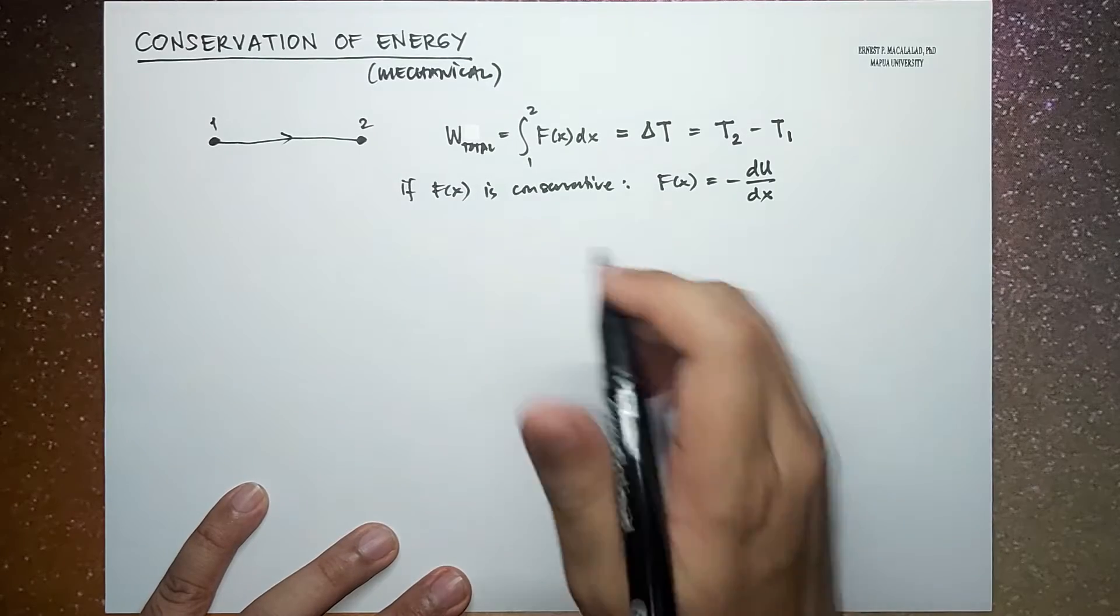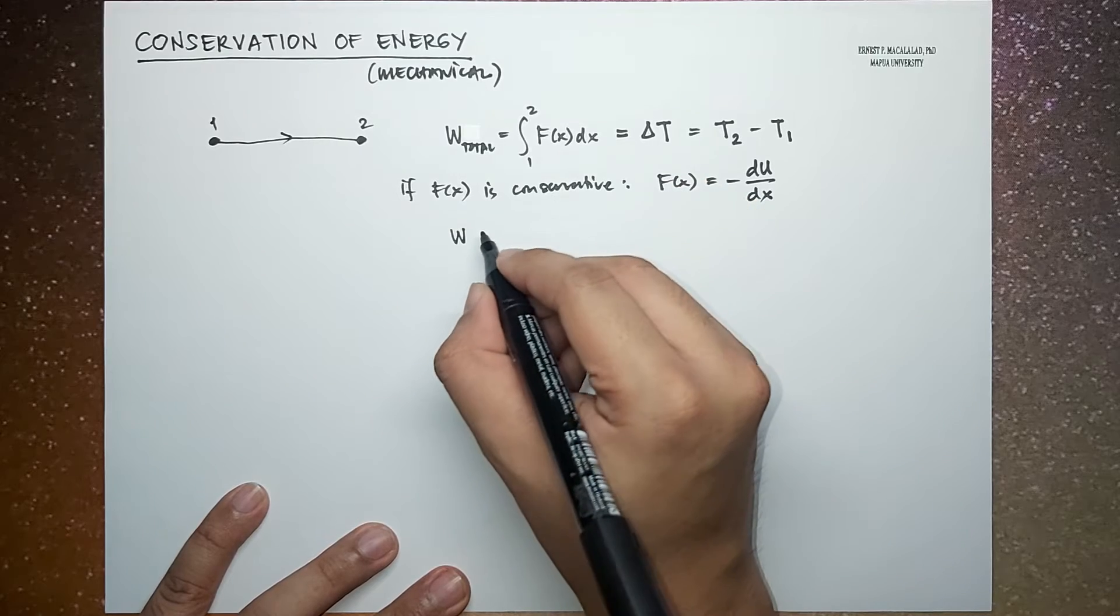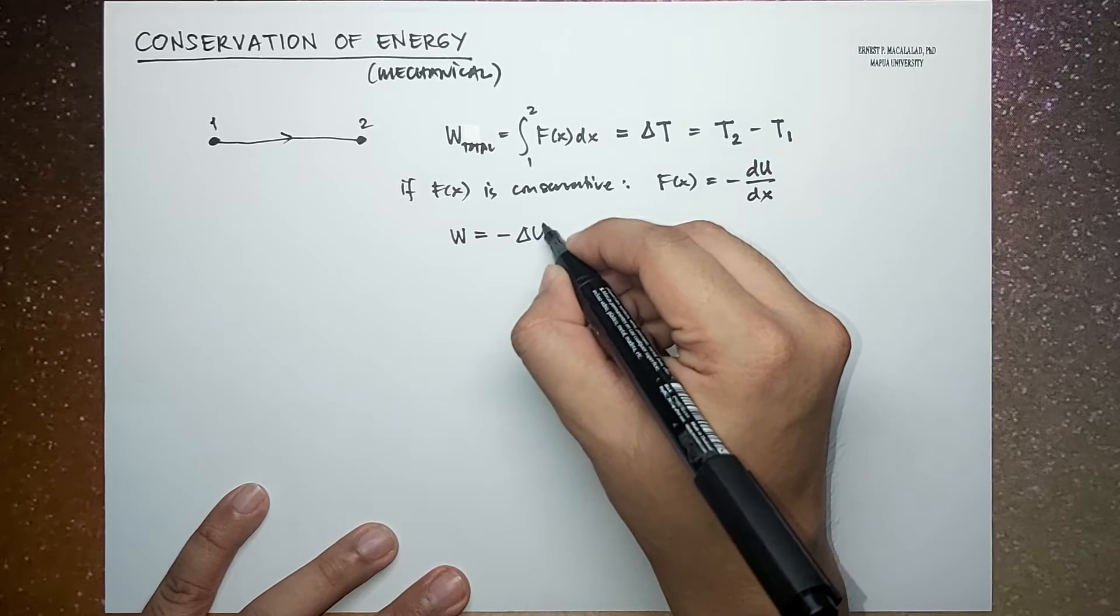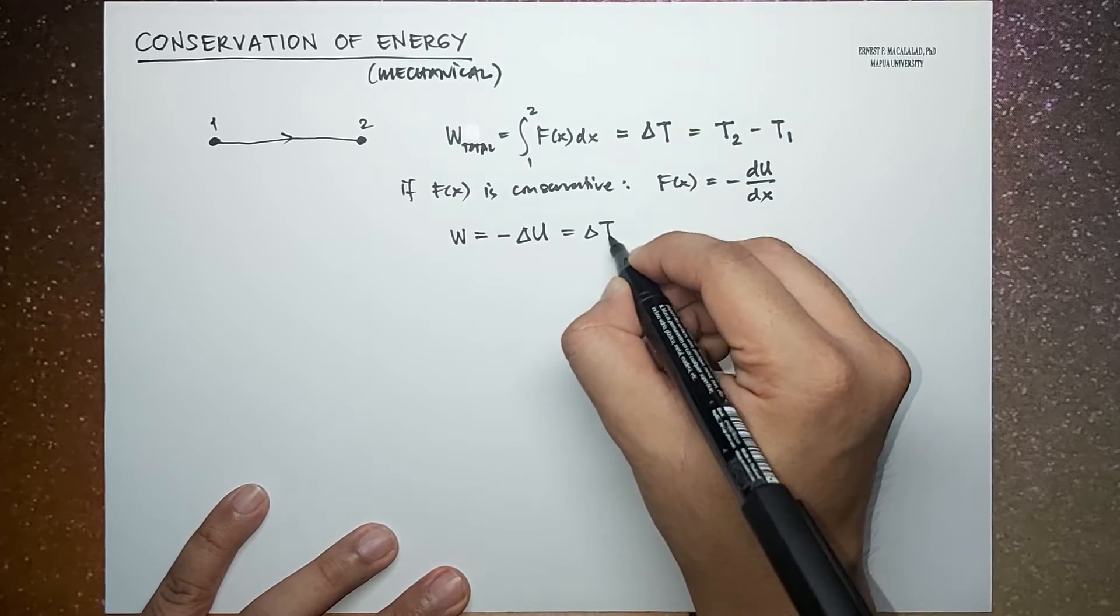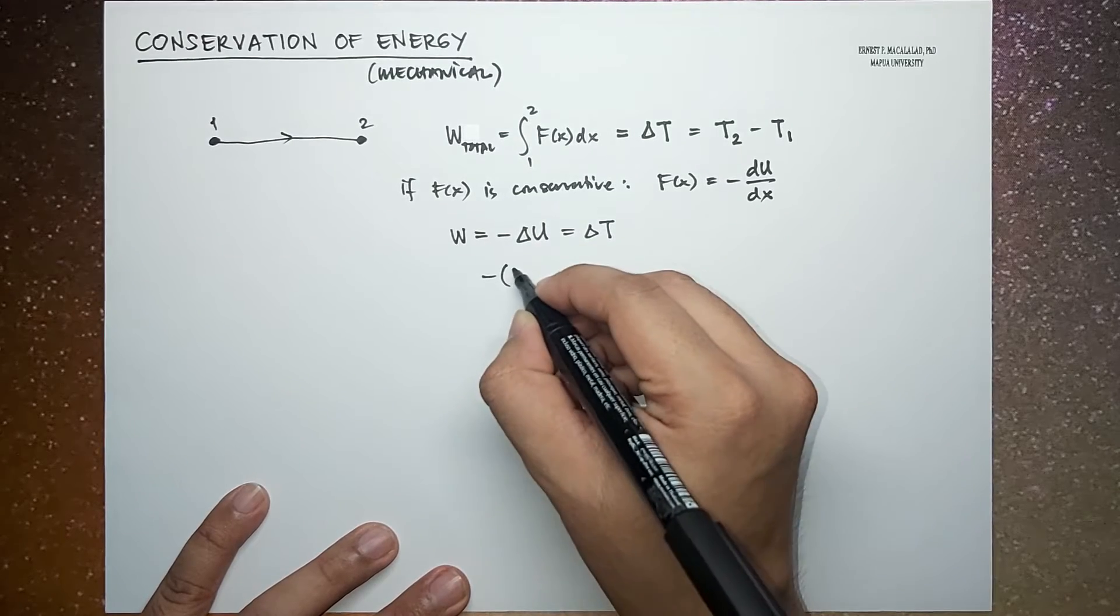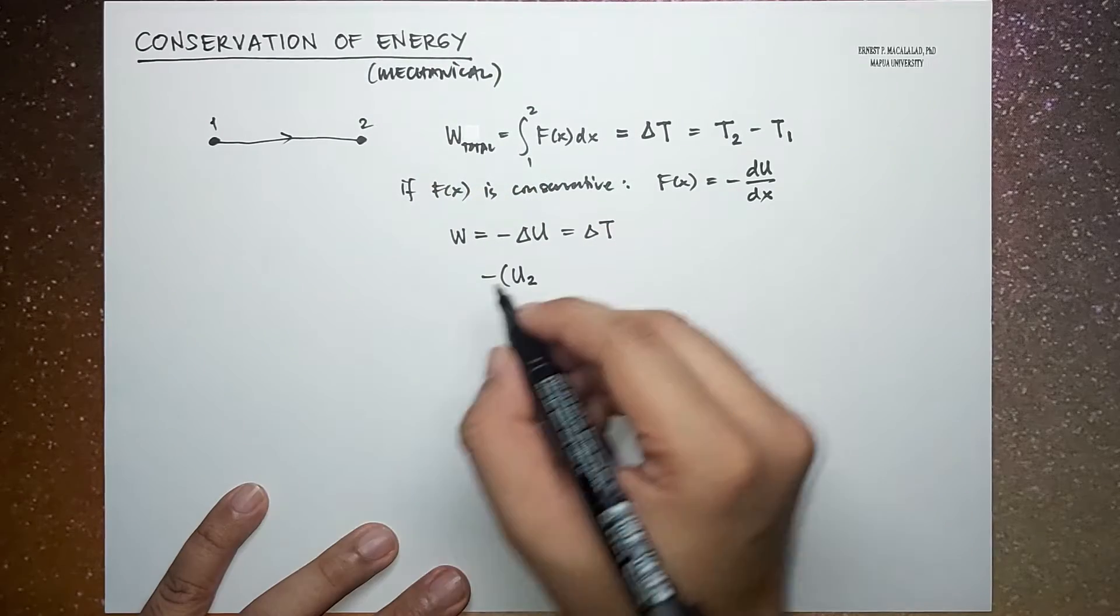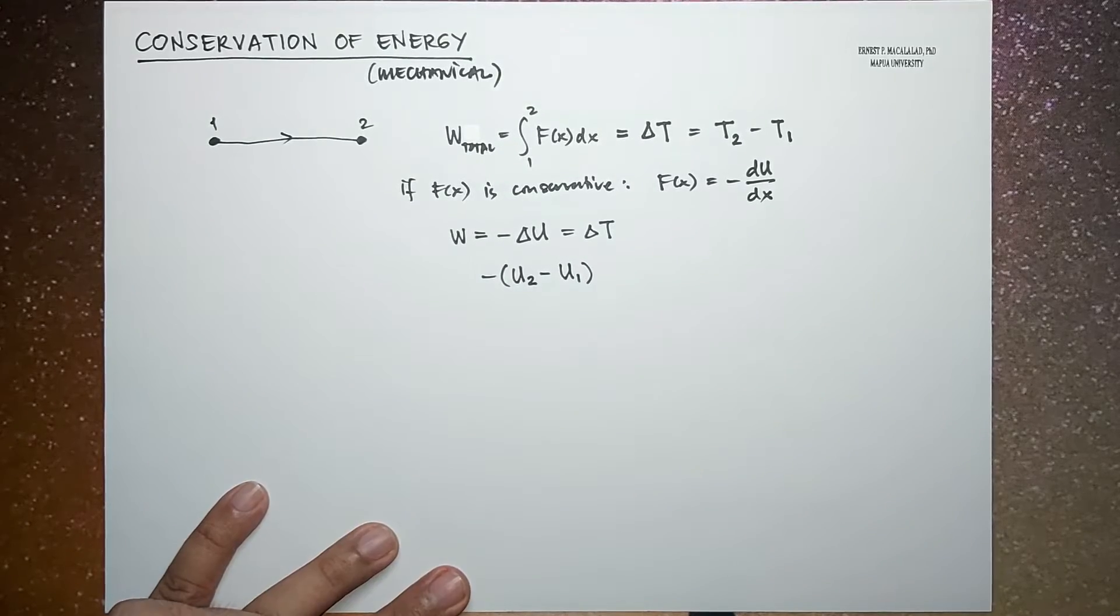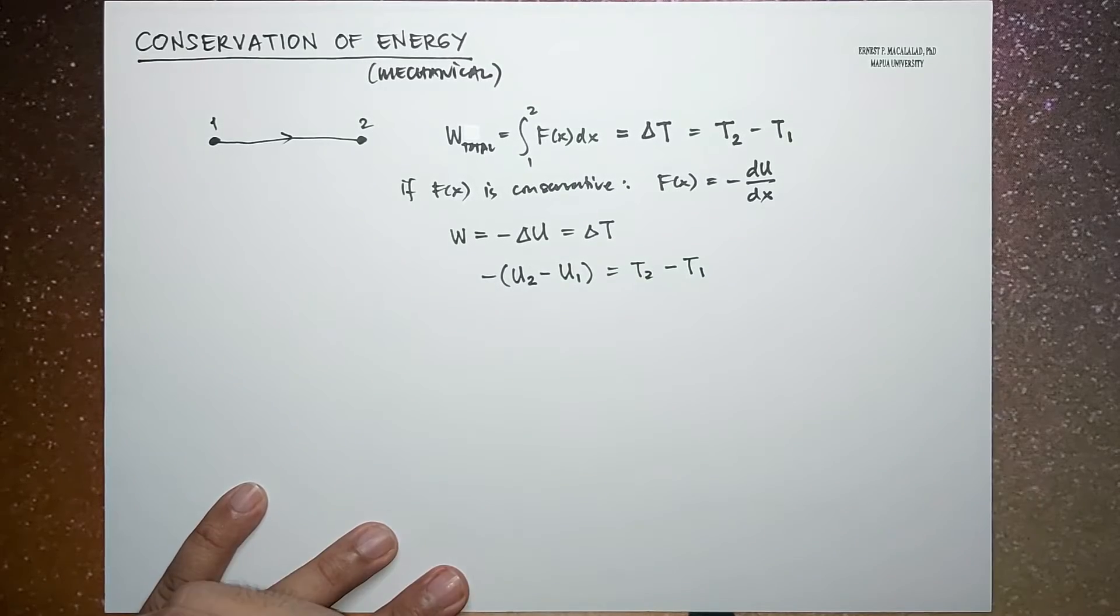So that means the work done by your conservative force, which is equal to the negative delta U, is equal to delta T. So negative delta U will be the potential energy after the displacement minus the potential energy before the displacement, and this is equal to T₂ minus T₁.